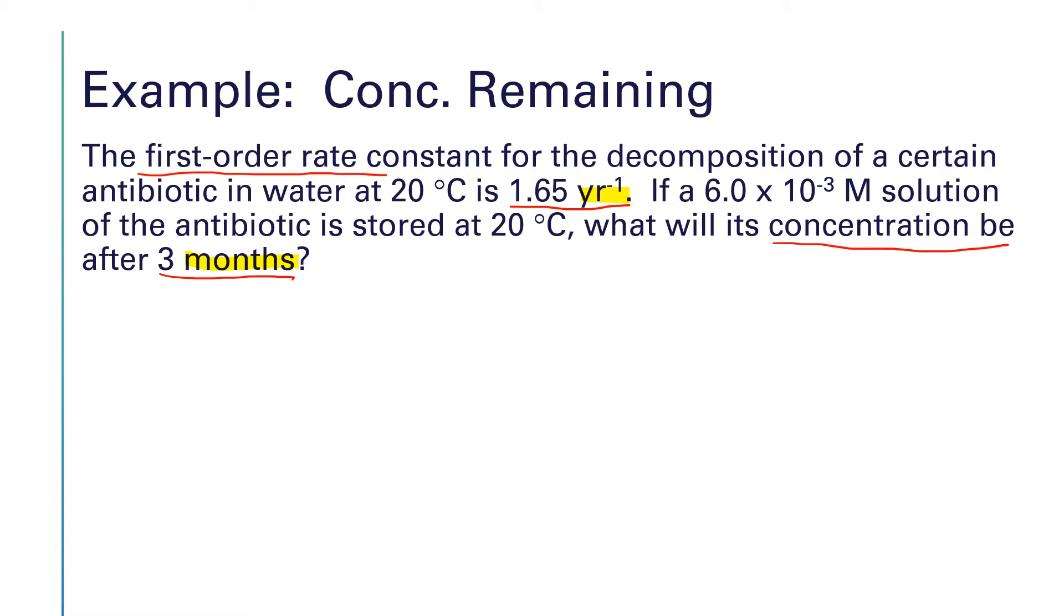I think it's probably easiest to do this in terms of years, because that's what our rate constants are already given as. And so we just need to convert that time to years. And so three months is equivalent to a quarter of a year.